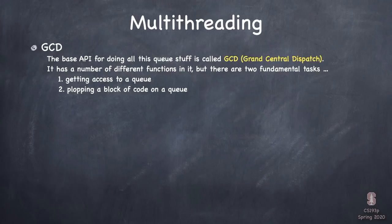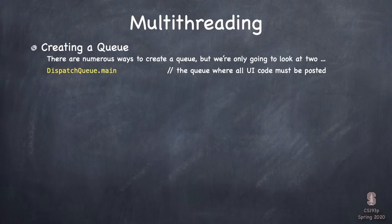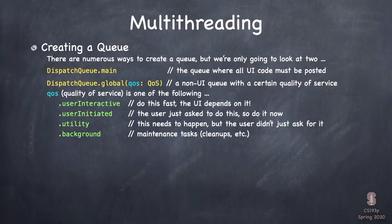GCD boils down to two fundamental tasks: getting a queue and plopping a block of code on the queue. For getting a queue, the main queue is simply DispatchQueue.main. For background queues, you call the static function DispatchQueue.global(), which takes an argument QoS — quality of service — which is essentially priority: how much we want the system to pay attention to blocks on this queue.